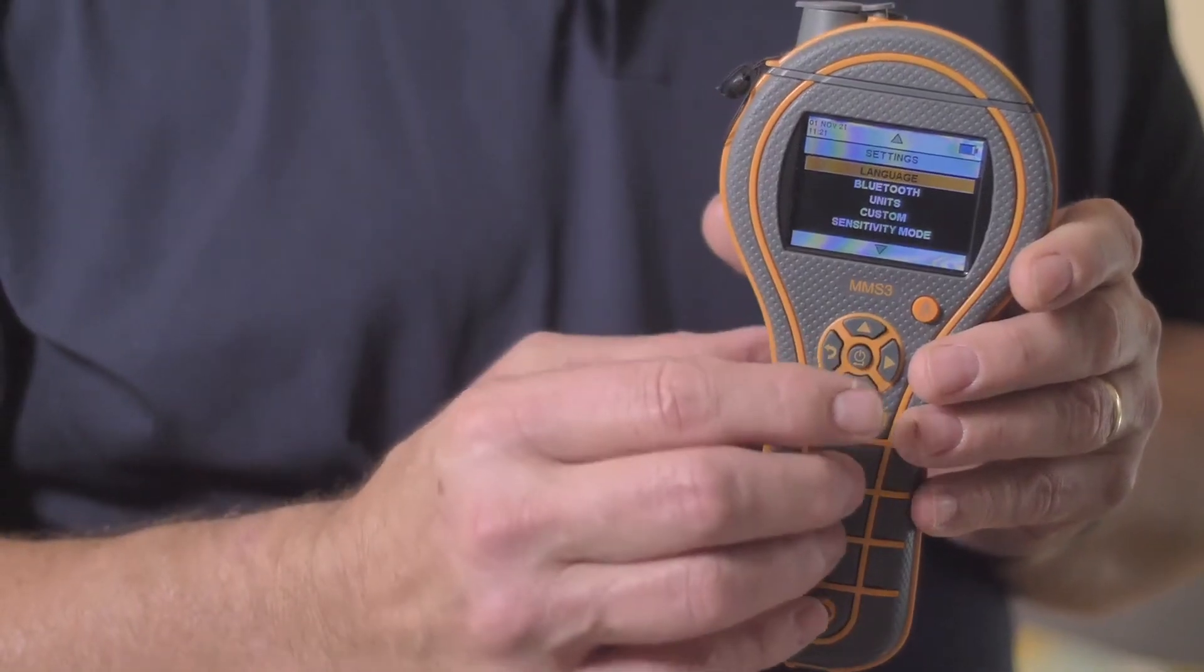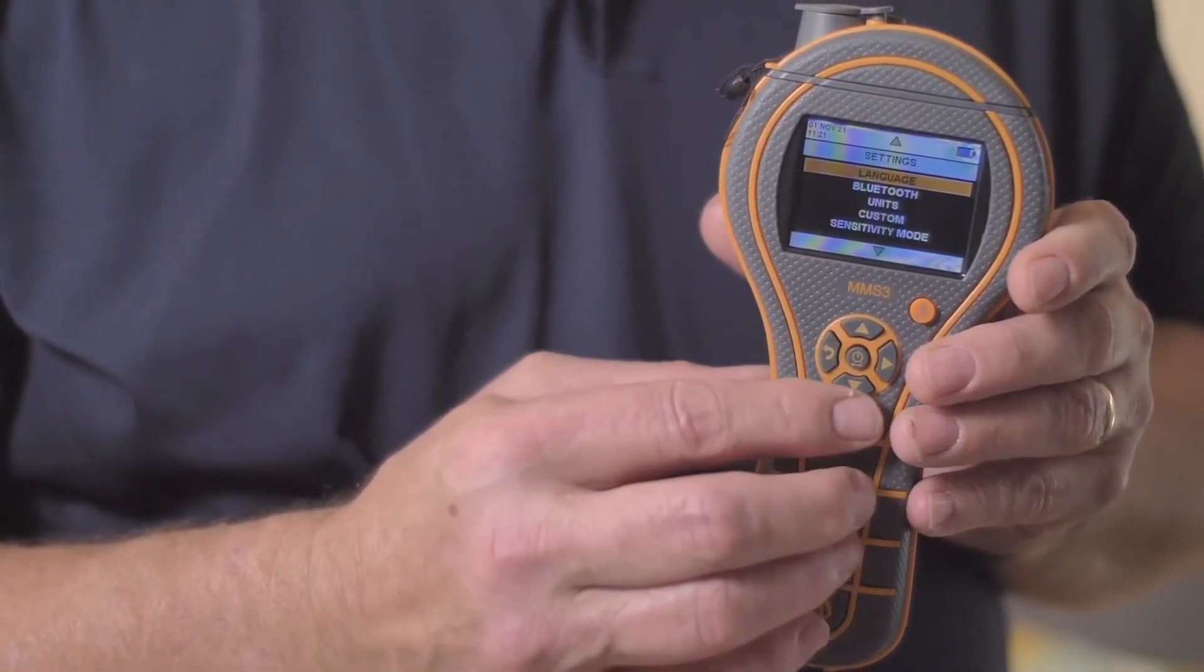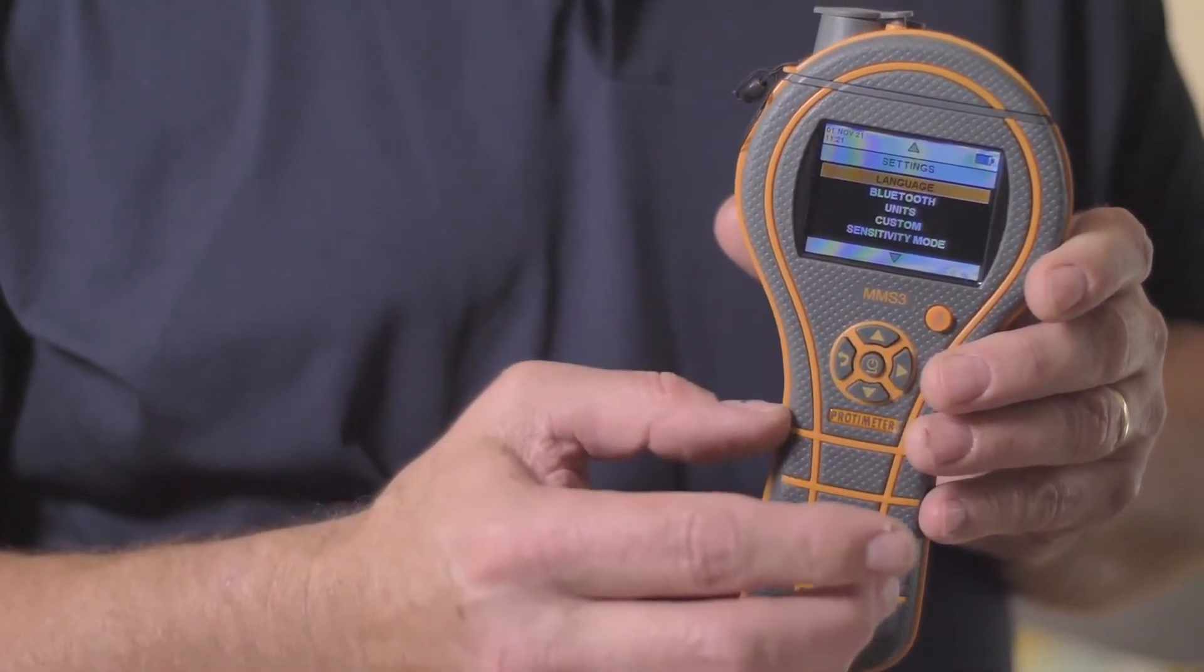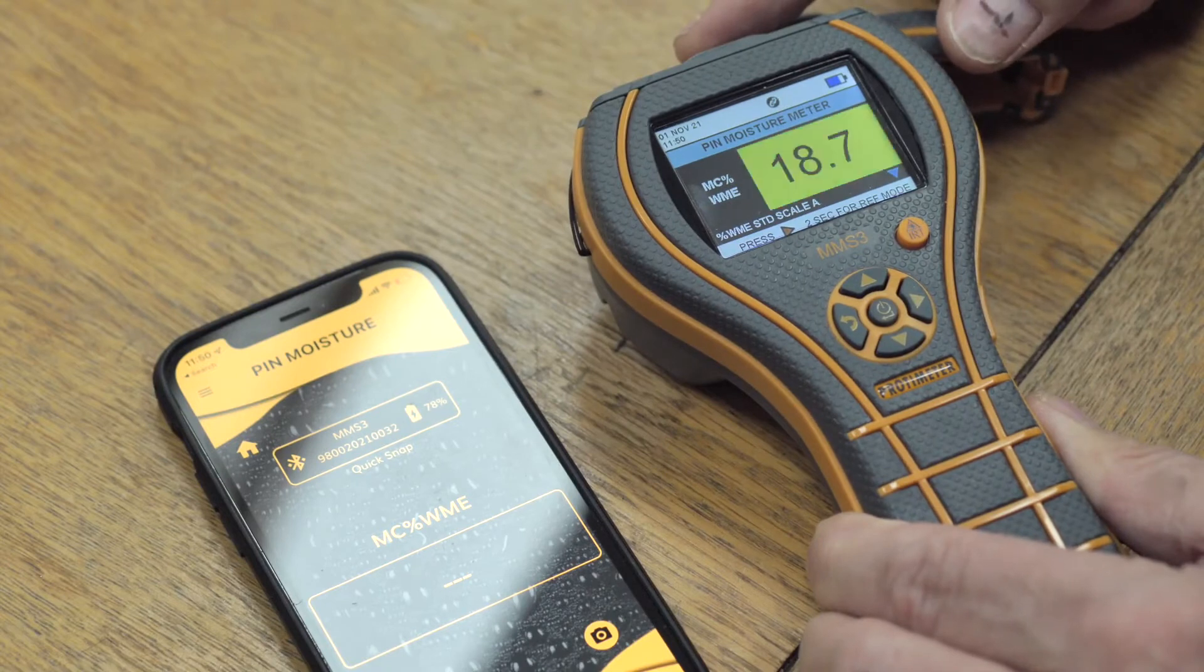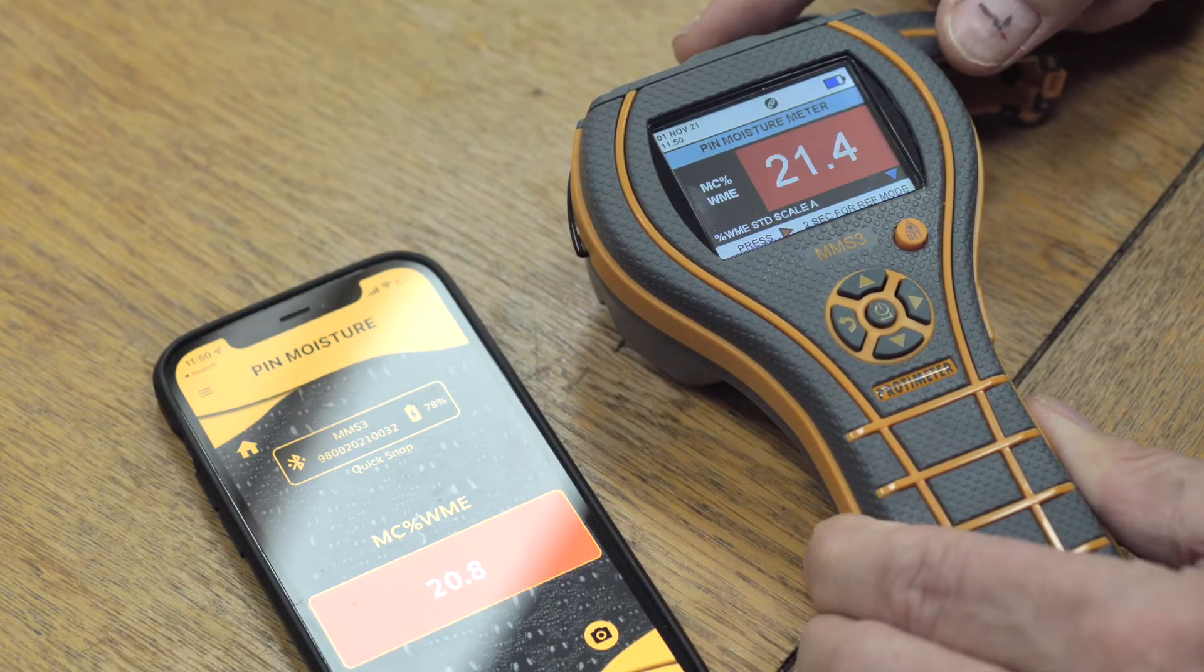From the settings menu, you can set things like metric or non-metric readings, as well as the languages. And this is also where you can turn on the Bluetooth to connect to the app. We'll talk more about the app in another video.